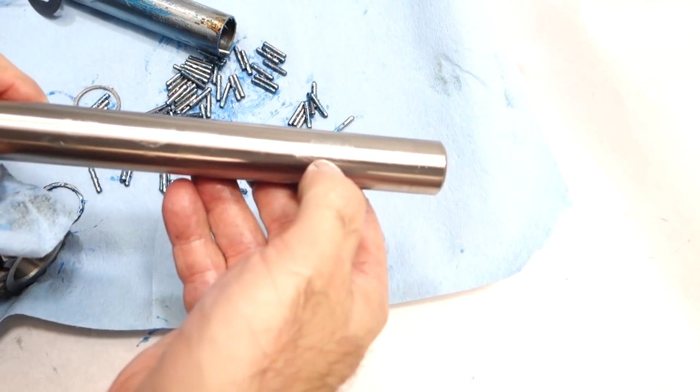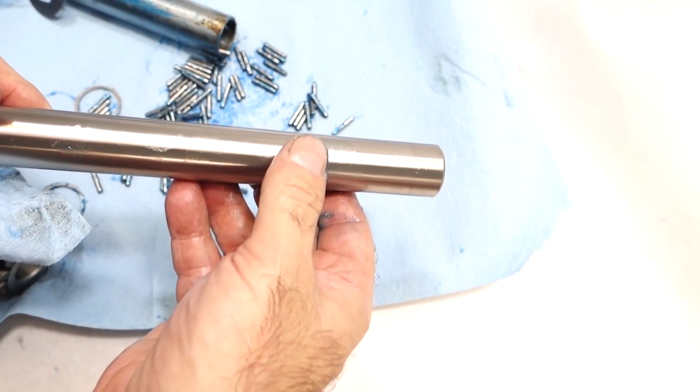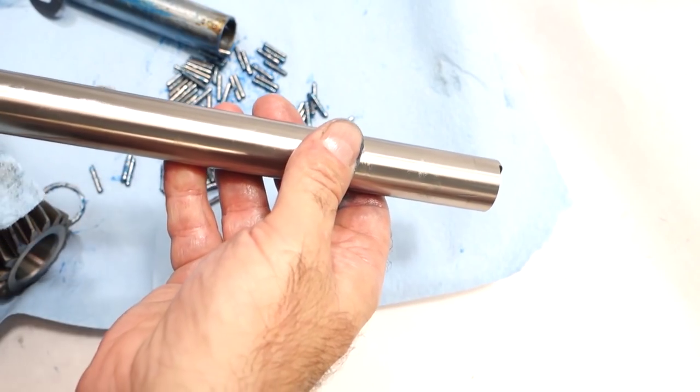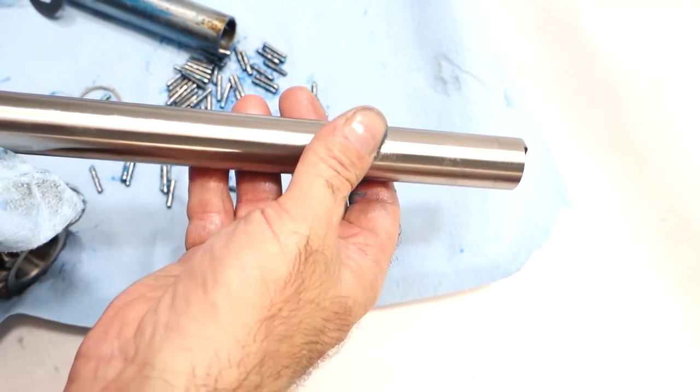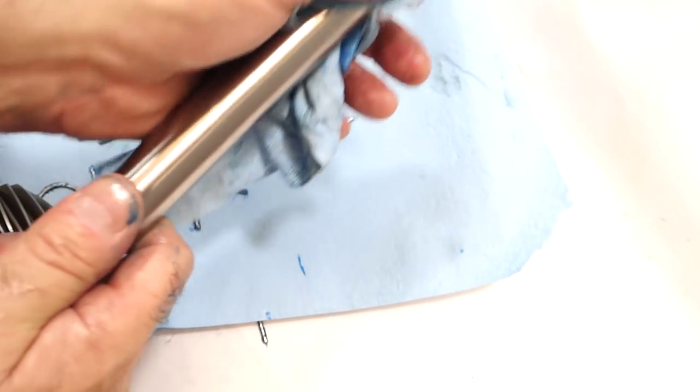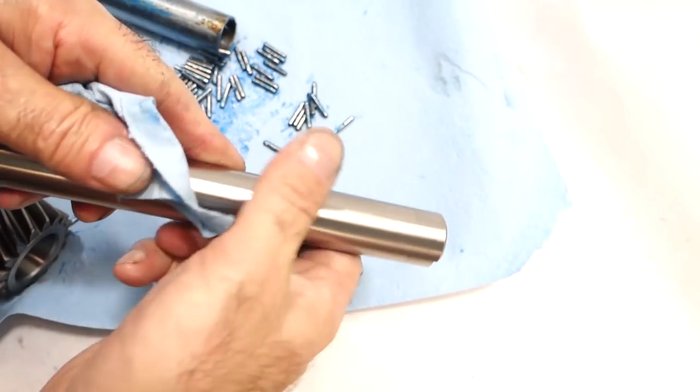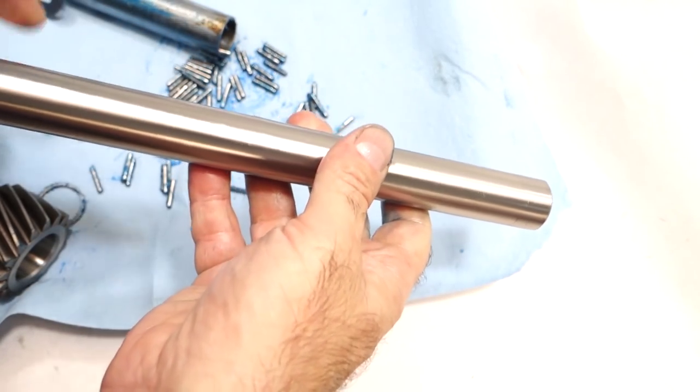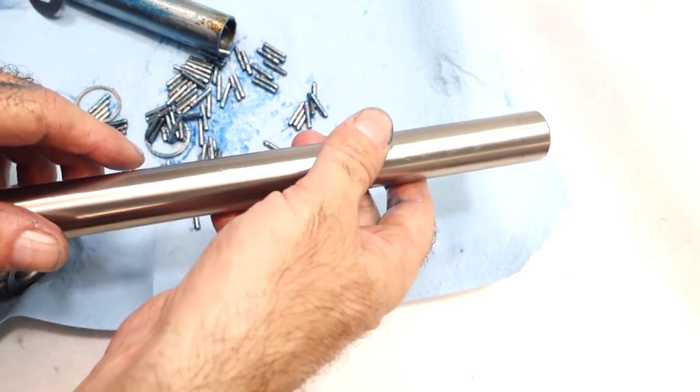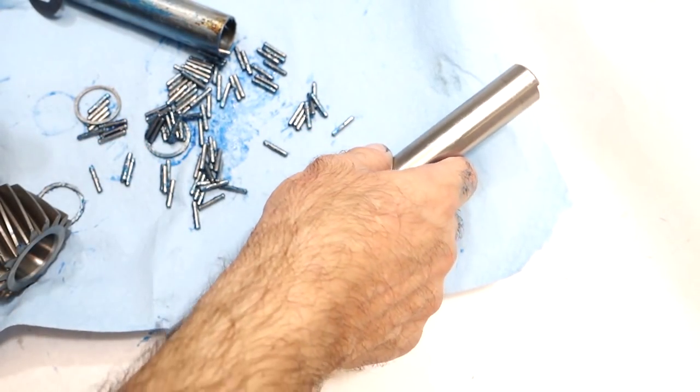Of course we follow the same method, push the counter shaft through. A lot of times you'll get dings and divots in the shaft and you really don't see them or feel them until you put this shaft in the gear and spin it. That is why I always build the cluster gear and the shaft assembly outside of the transmission, rotate it and test it before I put it in the gearbox. It's the smart thing to do, it's the best way to do it.